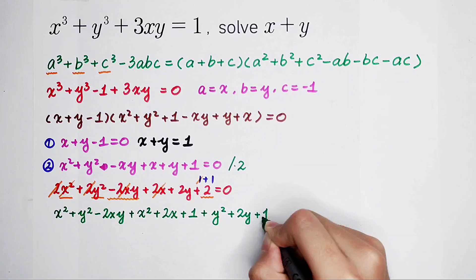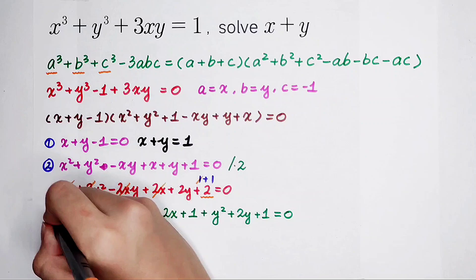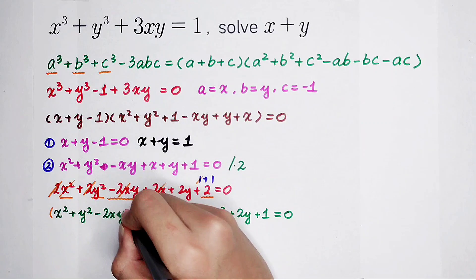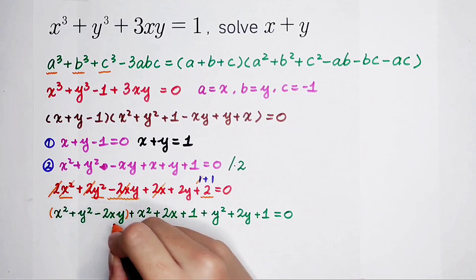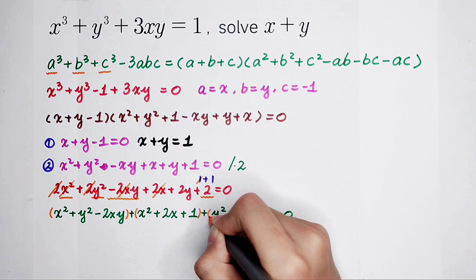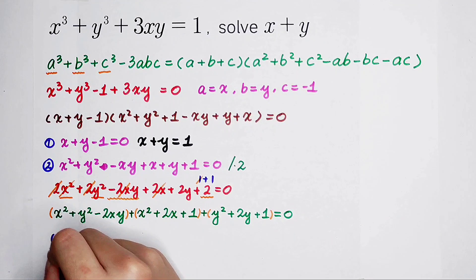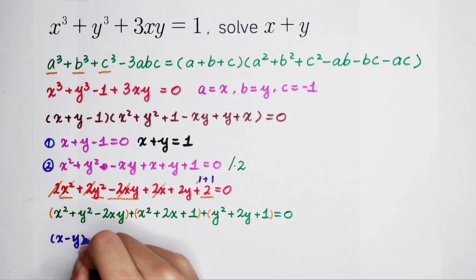So the left-hand side, we can regard these three terms as a group, this as a group, this as a group. Use the second binomial formula, it is just (x minus y) all squared.